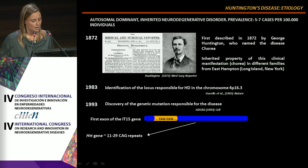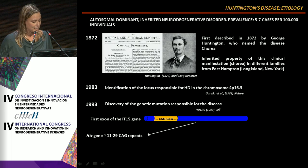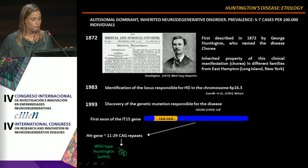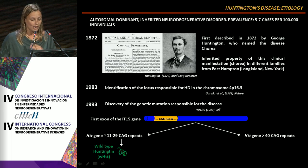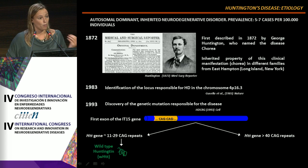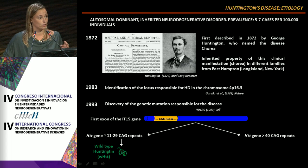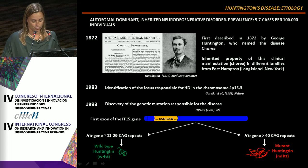Individuals not affected by HD exhibit between 11 and 29 CAG repetitions, codifying for the wild-type Huntingtin, while HD patients exhibit more than 40 CAG repetitions, codifying for the mutant Huntingtin.